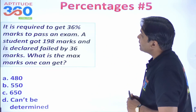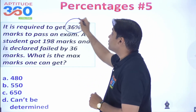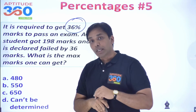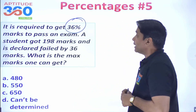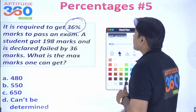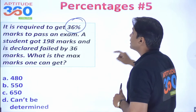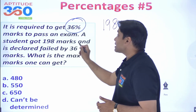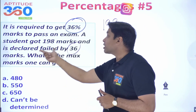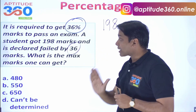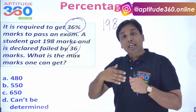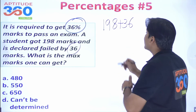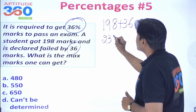Now moving to exam problems. It is required to get 36% of marks to pass an examination. A student gets 198 marks and still fails. He is declared failed by 36 marks — meaning he needed 36 more marks to pass. So the passing mark = 198 + 36 = 234.